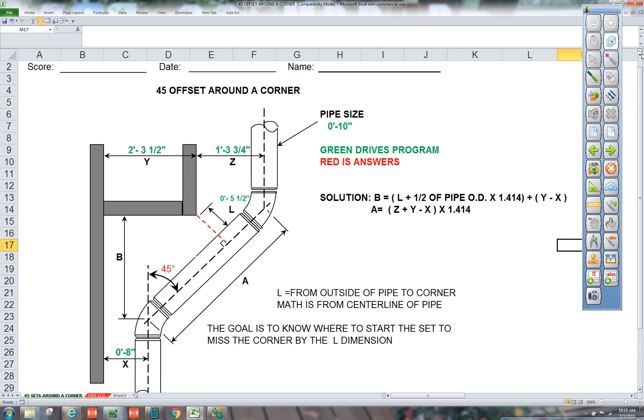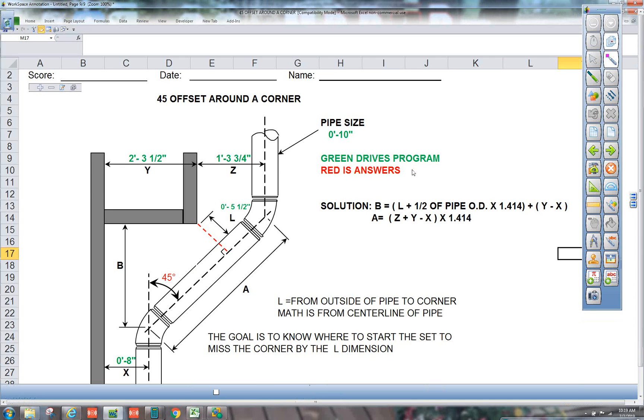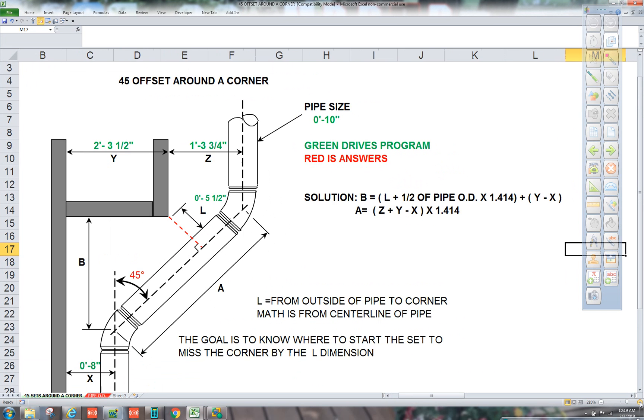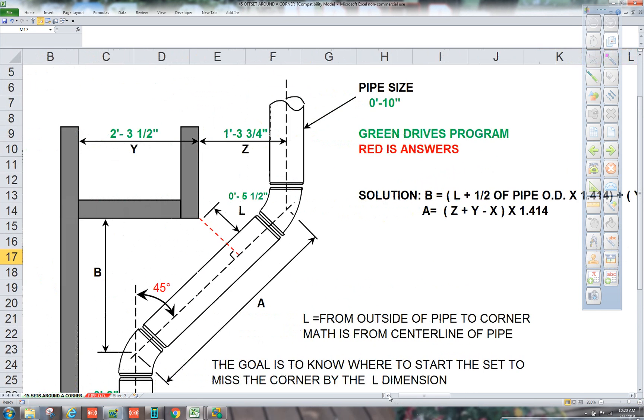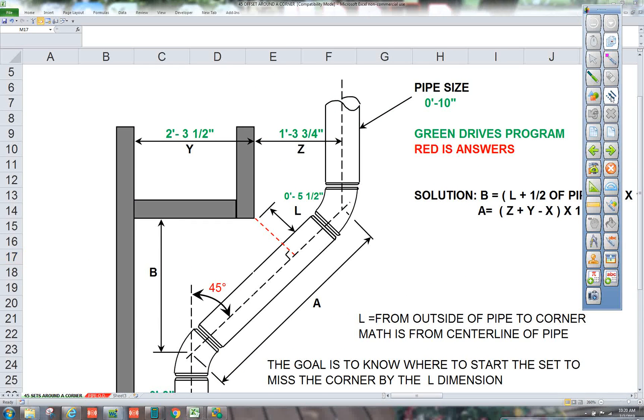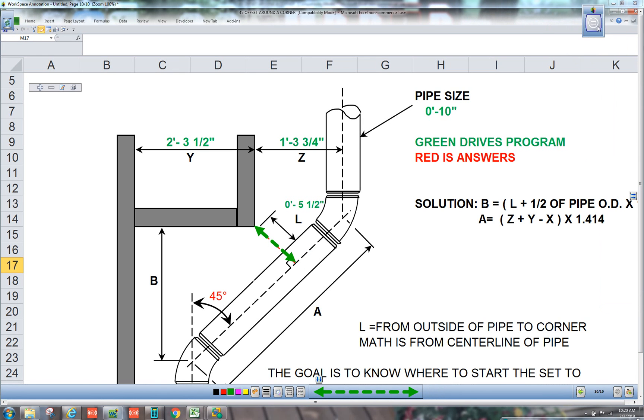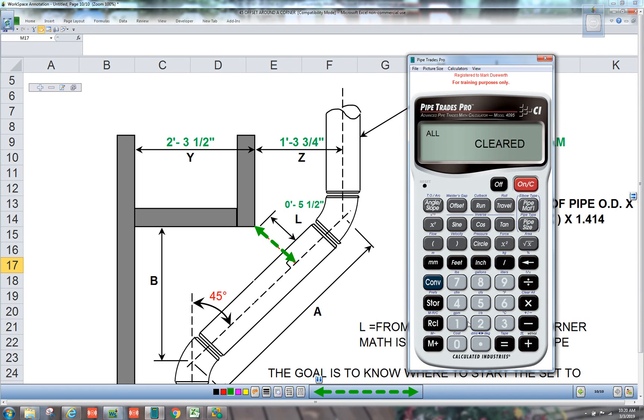So in the formula, we got L, plus half of the pipe OD. Let's blow this up here so we understand. So the geometry for the triangle is from the side of the pipe plus half the pipe. That's what this formula is saying. L plus half of pipe OD.